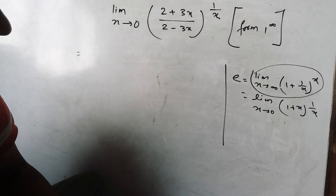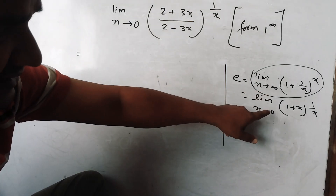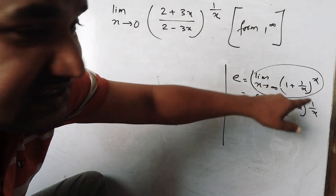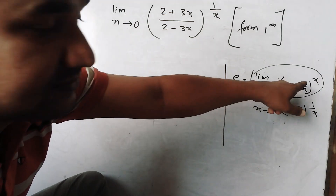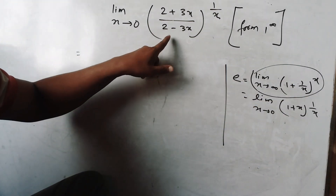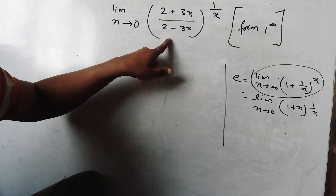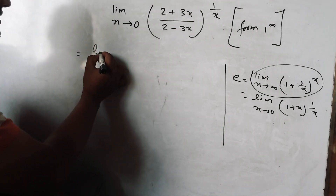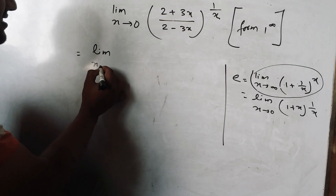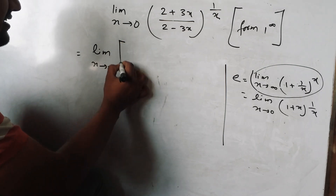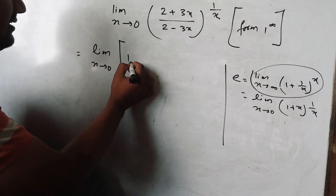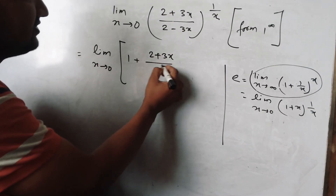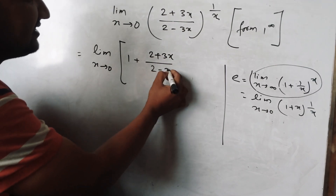The second step uses the formula: 1 plus x equals e, as x tends to 0, so x tends to 0 is equal to 0 in that limit definition.